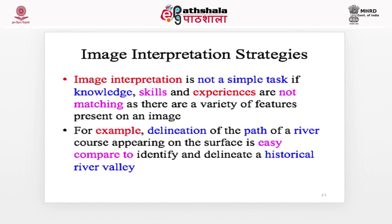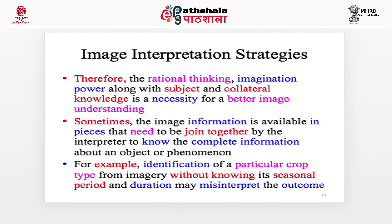Image interpretation strategies: image interpretation is not a simple task if knowledge, skills, and experience are not adequate, as there are a variety of features present on an image. For example, delineating the path of a river course appearing on the surface is very easy compared to identifying and delineating a historical river valley. Therefore, rational thinking, imagination, and subject and collateral knowledge are necessities for better image understanding. Sometimes image information is available in pieces that need to be joined together by the interpreter to know the complete information. For example, identifying a particular crop type from imagery without knowing its seasonal period and duration may misinterpret the outcome.